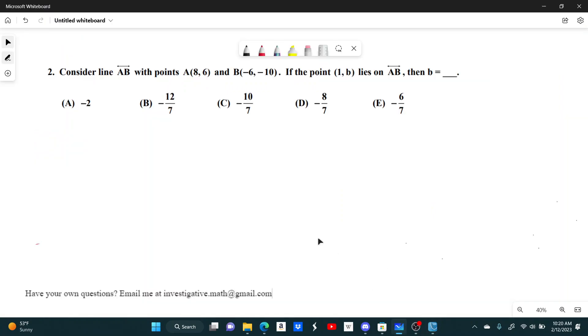Number two, consider the line AB with points A(8,6) and B(-6,-10). If the point (1,B) lies on line AB, then B equals what?